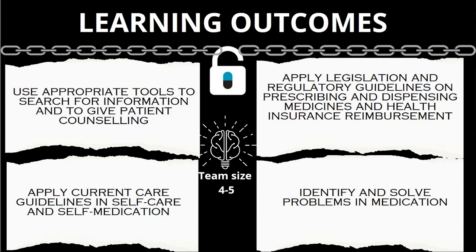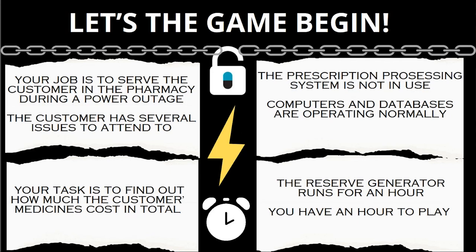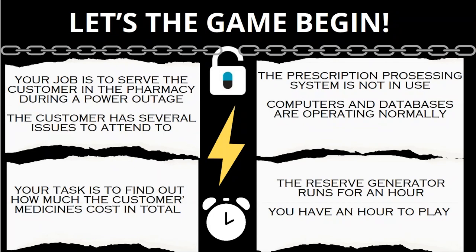The game is played in a team of maximum five students. It's a thunderstorm and there's no electricity in the pharmacy. Computers and databases are operating normally, but the prescription processing system is not in use. A customer comes to the pharmacy with many issues to attend to. The players' final task is to find out how much the customer's medicines cost in total, and they have one hour — which is how long our reserve generator runs.